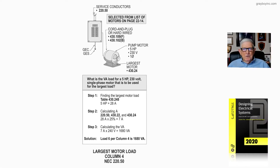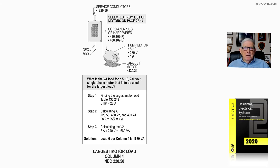Now let's take a look at figure 22-17, which deals with determining the largest motor load in the column, in accordance with 220.50. If you stayed with us through these calculations, we have columns 1, 2, 3, and 4, where these loads are placed in columns so that you keep your loads straight.